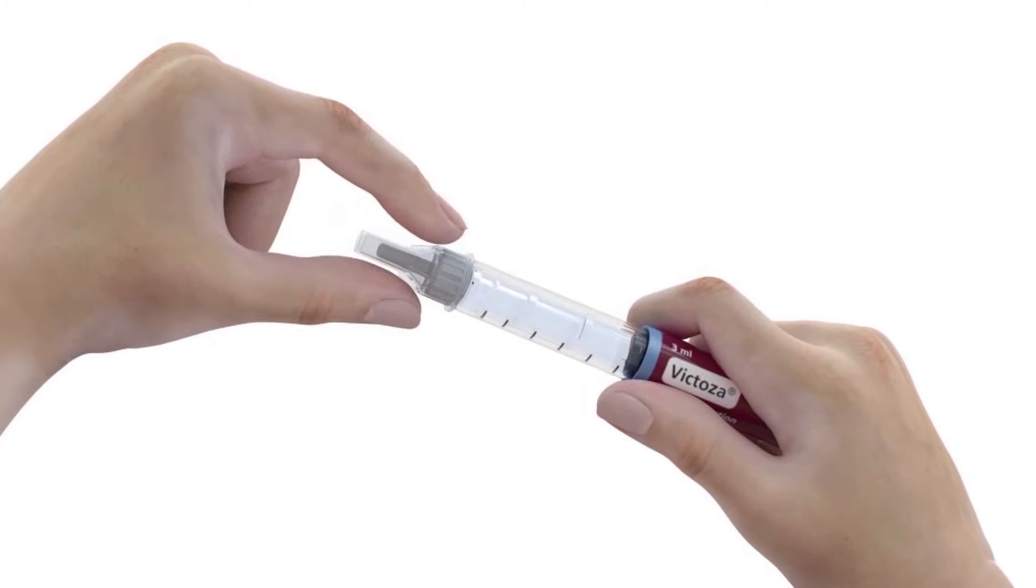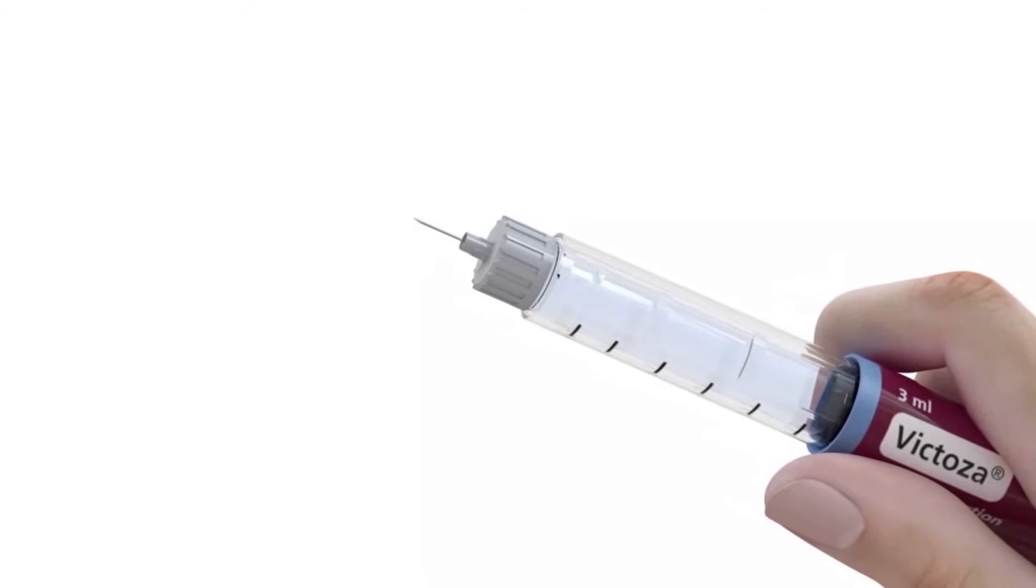To prepare Victoza pen, attach a new needle. If using a Novo Fine needle, screw this straight and tightly onto the pen.